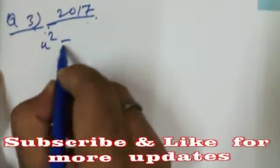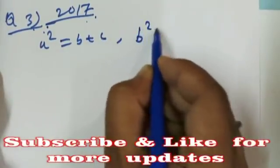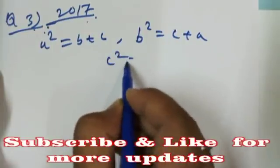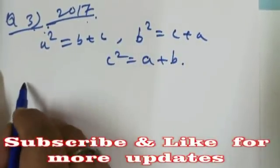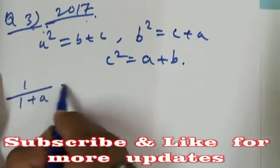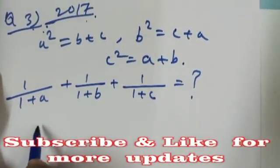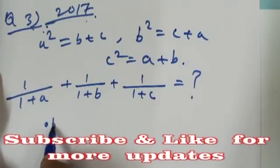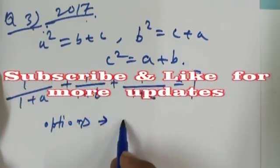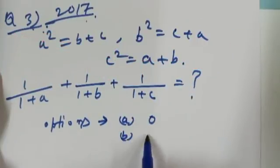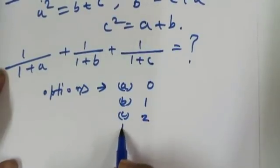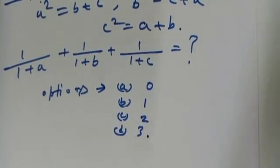Question number 3, which also appeared in 2017. Given: A·B² = (B+C), B² = (C+A), C² = (A+B). What will be the value of 1/(1+A) + 1/(1+B) + 1/(1+C)? Options: A is 0, B is 1, C is 2, D is 3.